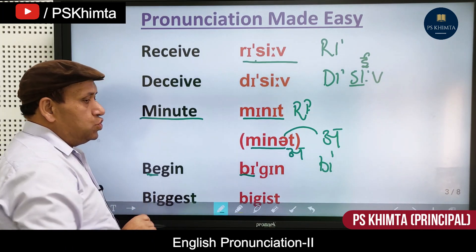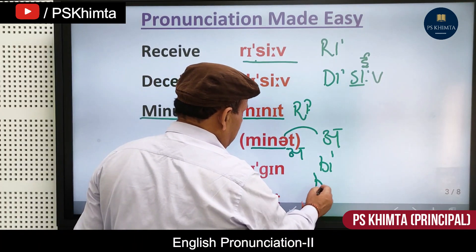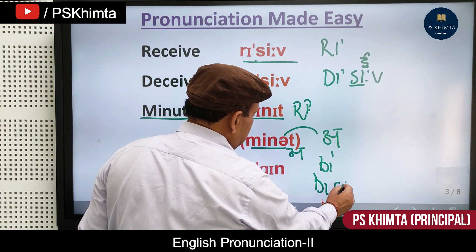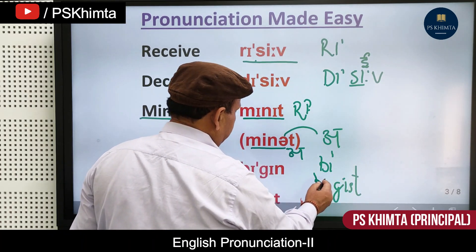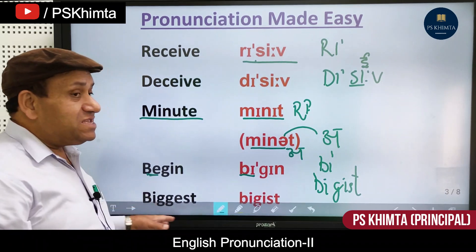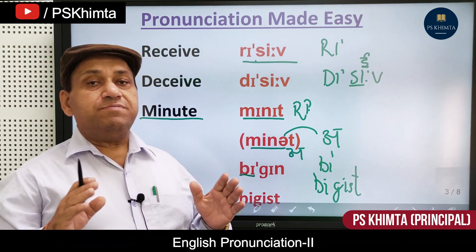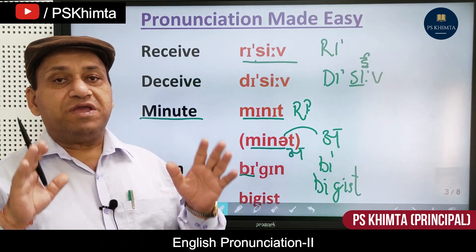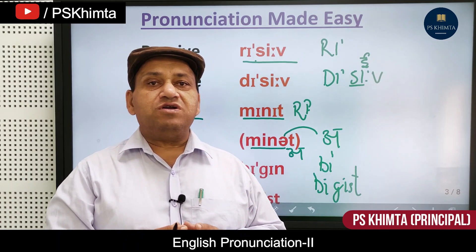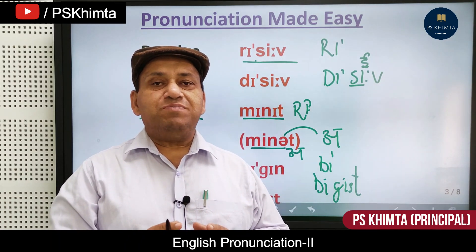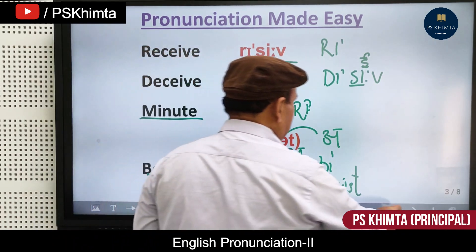Next is 'biggest.' We commonly say 'biggest,' but the correct pronunciation is 'be-guest': biggest. For example: 'What is the biggest problem with this class?' We generally mispronounce it; the correct form is 'biggest.'